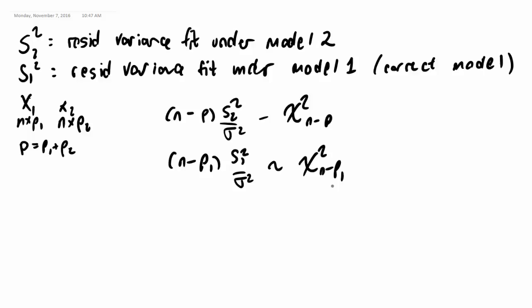So what we can do is we can then calculate the variance of N minus P1 times S2 squared over sigma squared, which is just the variance of a chi squared, which is twice its degrees of freedom. So that's 2 N minus P, that's not P1 there, that's P. But that's equal to N minus P squared over sigma to the fourth times variance of S2 squared.